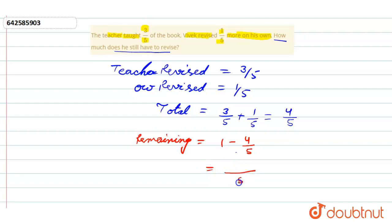We can write one as one upon one. Taking LCM of five, one times five is five, so five minus four. The remaining is one by five. Okay, thank you.